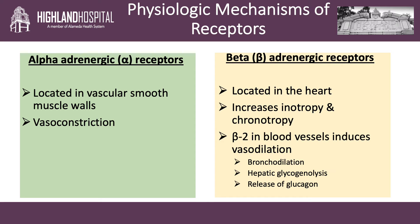Additionally, beta-2 adrenergic receptors are located in the blood vessels and induce vasodilation. Beta-2 receptors are also located in the lung, the liver, and in the pancreas, where stimulation will cause corresponding bronchodilation, hepatic glycogenolysis, and pancreatic release of glucagon.